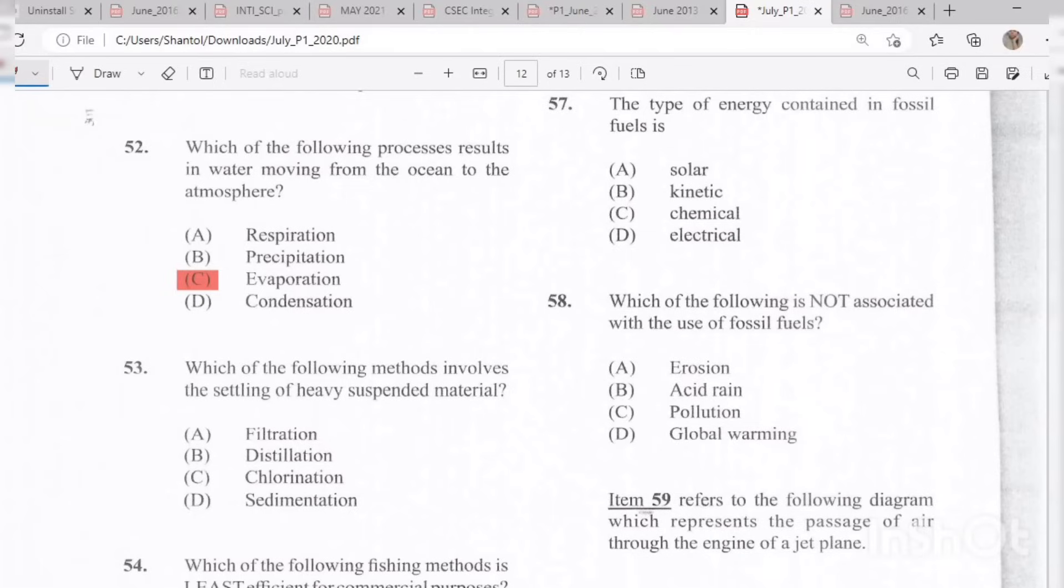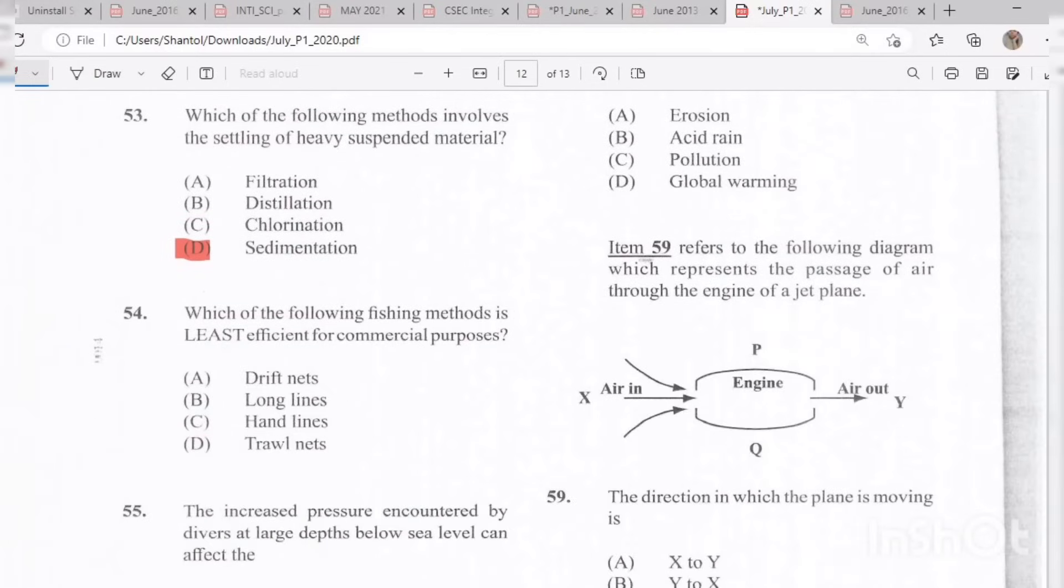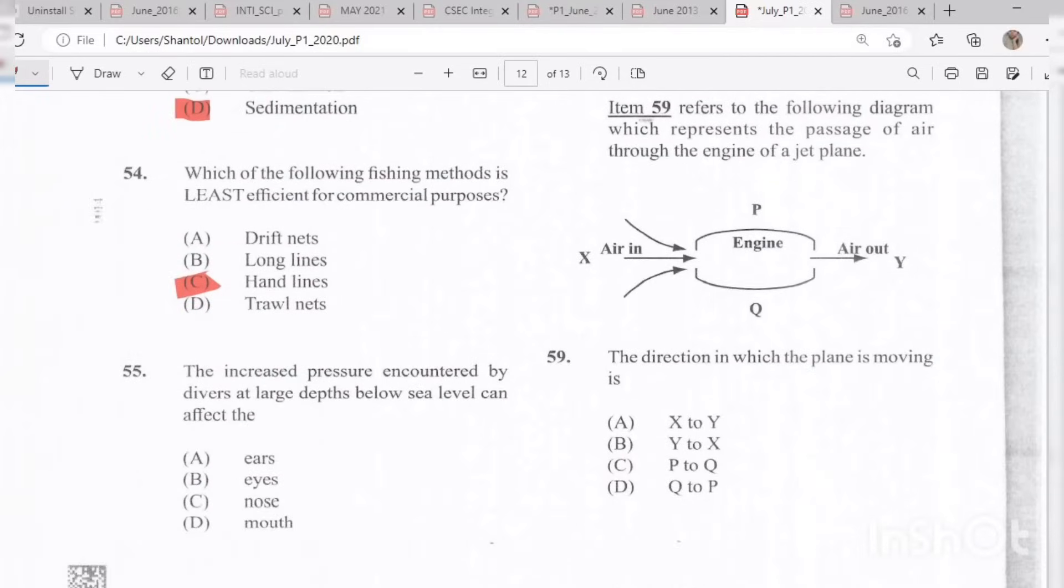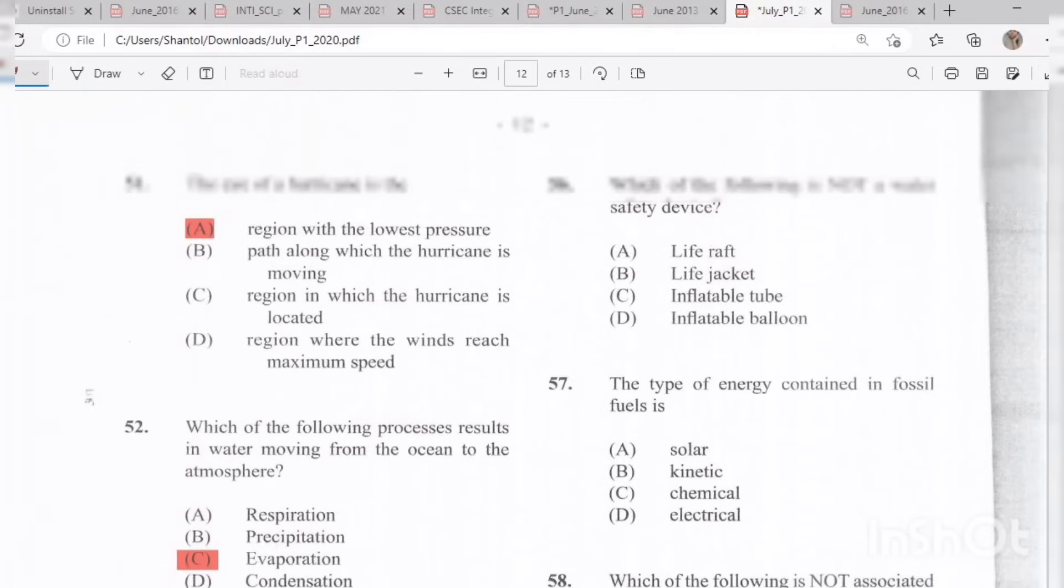Question 53: Which of the following methods involves the settling of heavy suspended material? The answer is D, sedimentation. Question 54: Which of the following fishing methods is least efficient for commercial purposes? The answer is C, hand lines. Those are not efficient for commercial purposes. Hand lines only produce one fish per catch. Question 55: The increased pressure encountered by divers at large depths below sea level can affect A, their ears.